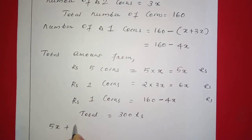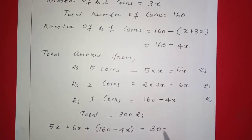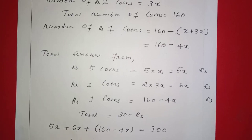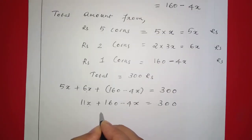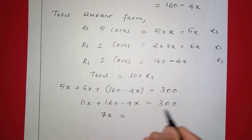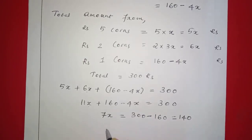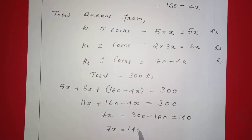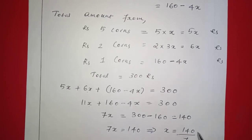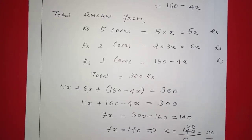Setting up the equation: 5x plus 6x plus 160 minus 4x equals 300. Combining: 11x minus 4x is 7x, plus 160 equals 300. So 7x equals 300 minus 160, which is 140. Therefore x equals 140 divided by 7, which equals 20.